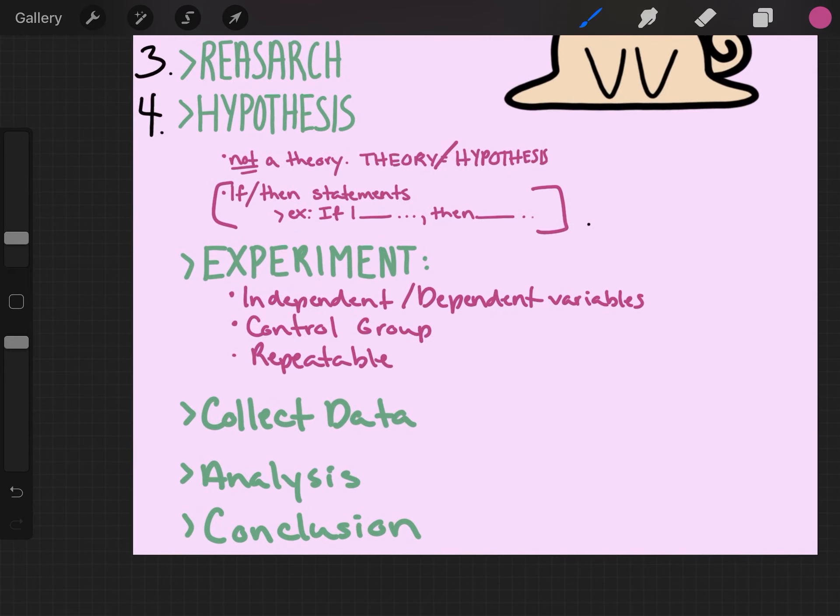From the hypothesis, you can then create your experiment. It really helps: if I melt different brands of chocolate, then Dove will have the fastest melting speed. In your experiment you must have independent variables. Remember, your independent variable is what you are measuring. Nope, my bad. This is what changes. It is independent.